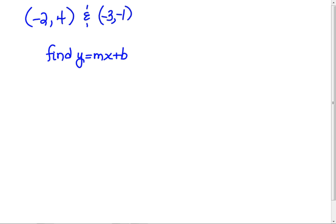We wrote the equation of a line in y equals mx plus b form. What are the numbers you have to find in this equation? The y and x's are going to stay the same. But what numbers do you have to find? The slope and the y-intercept.